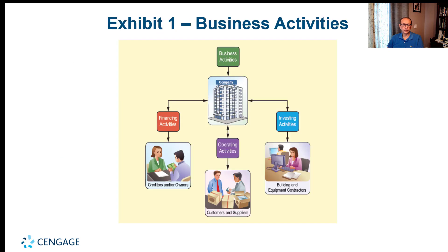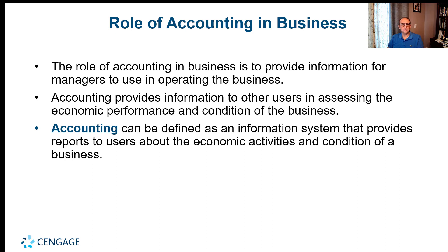Here we have an example where a company has different business activities: financing activities, investing activities, and operating activities. These are the different cycles within any business. Financing activities involve creditors and owners; investing activities involve buildings, equipment, and contractors; operating activities involve customers and suppliers. Later on, we'll cover the statement of cash flows, which is divided into these three areas: operating, investing, and financing activities.